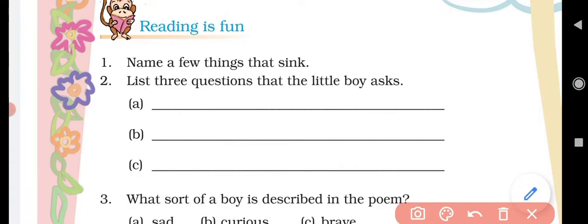List three questions that the little boy asks. The little boy asks: Why do lead and marble sink? Why does the sun shine? And why does the wind blow?